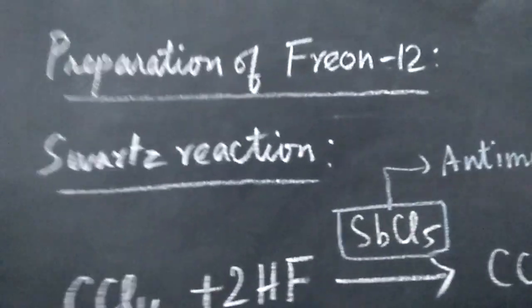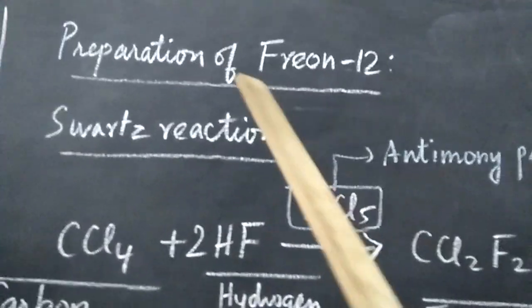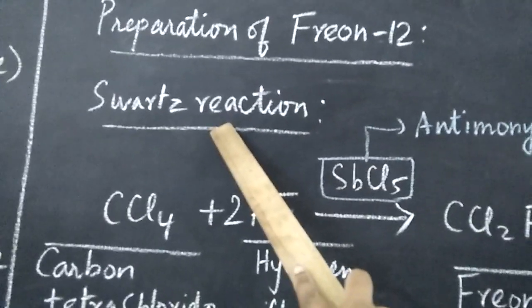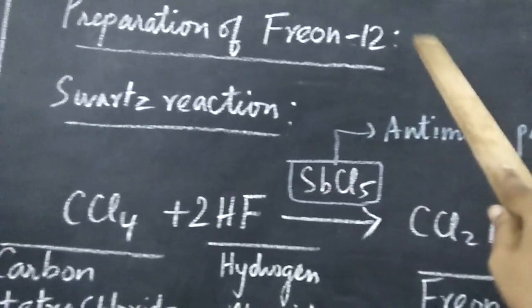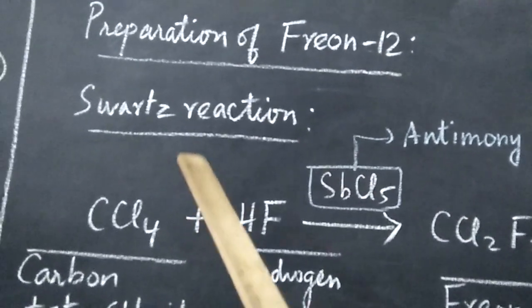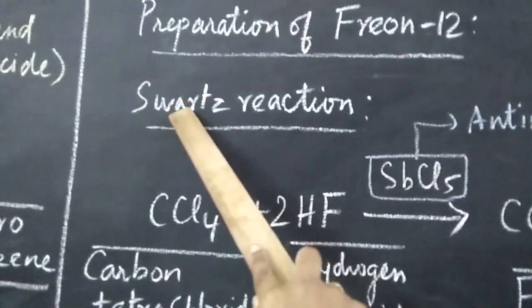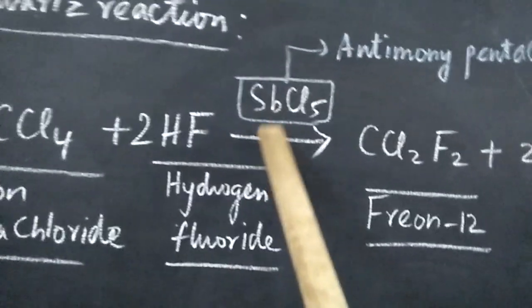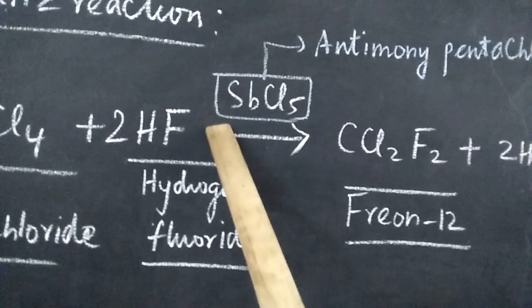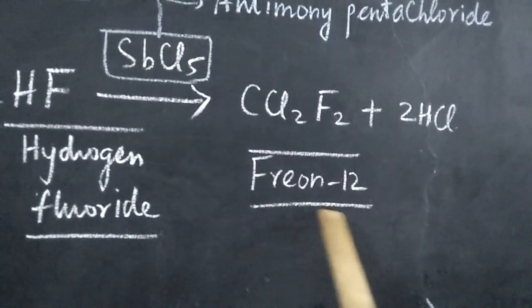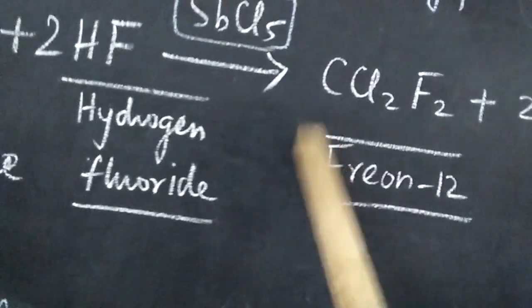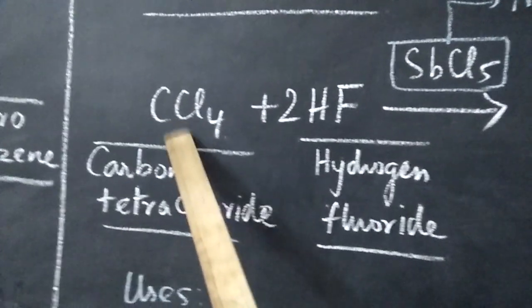The next compound is preparation of Freon-12. Freons are chlorofluorohydrocarbons. Freon-12 particularly is prepared by Swart's reaction. Why it is termed as Freon-12 is given in your textbook. Swart's reaction is the reaction between carbon tetrachloride and hydrogen fluoride in the presence of antimony pentachloride to form Freon-12. Carbon tetrachloride is CCl4, hydrogen fluoride is HF to form Freon-12, that is CCl2F2.